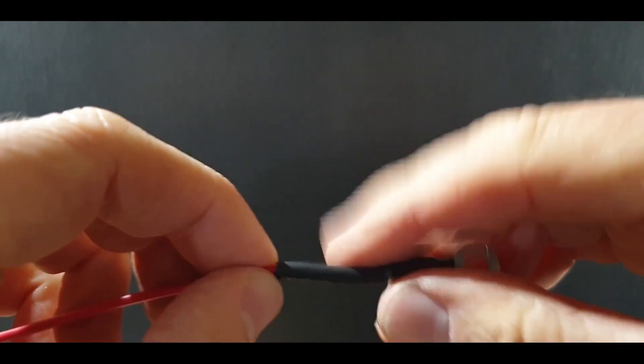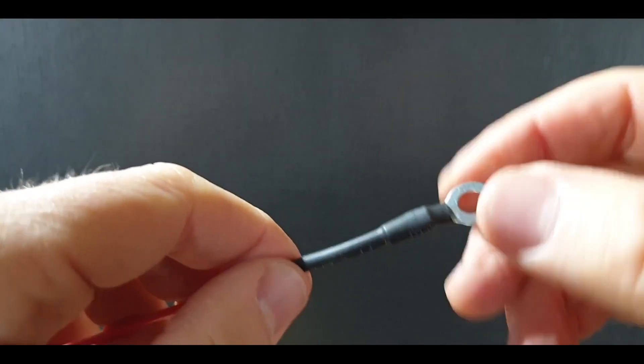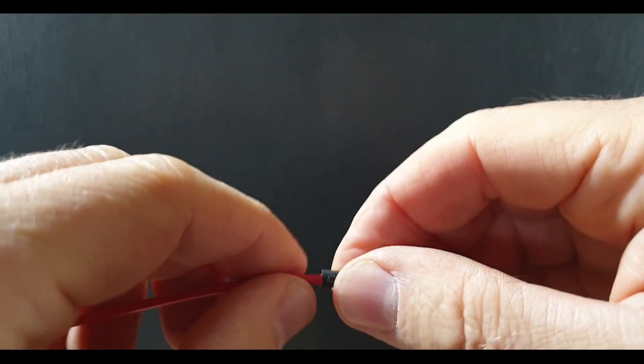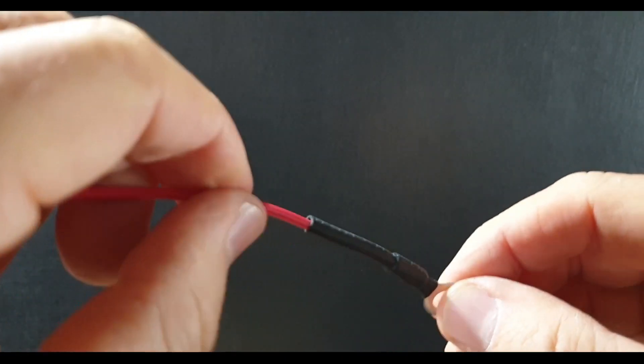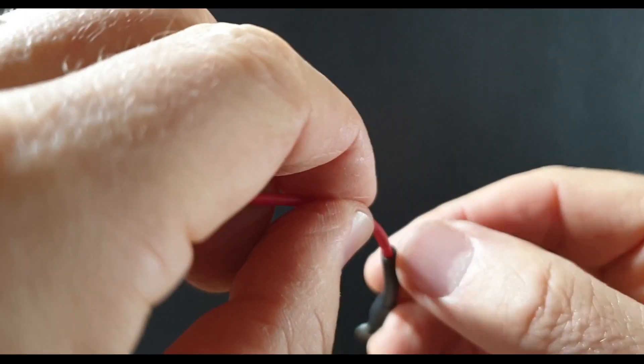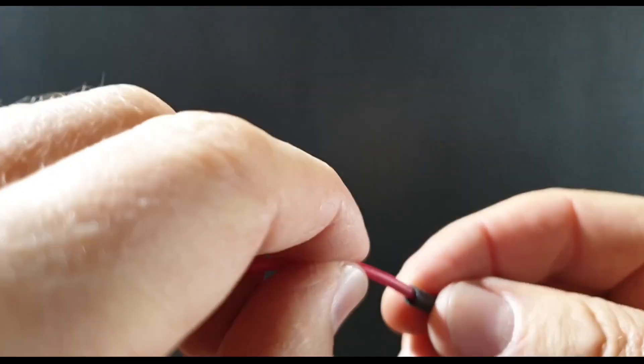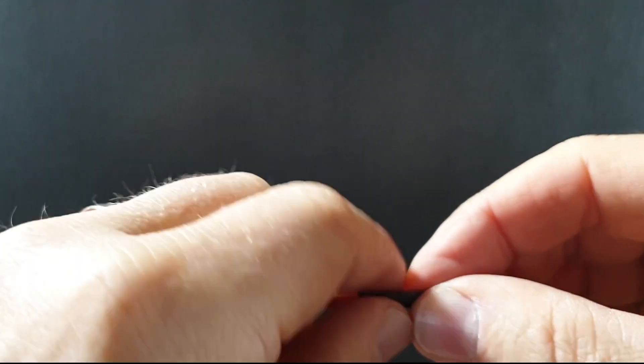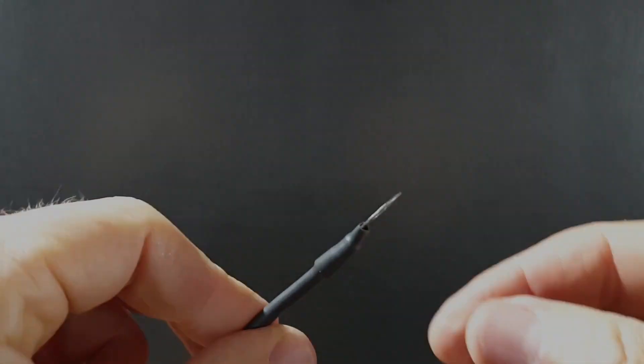Now ideally this would be self-adhesive heat shrink, because then what that does—the glue inside melts, squeezes out, and forms another waterproof seal. What you can do is if you think this is going to be a little bit too slack, you can put a smaller size on first and shrink them both down together, and that will take up any slack. But that gives you a much nicer waterproof or water-resistant connection.